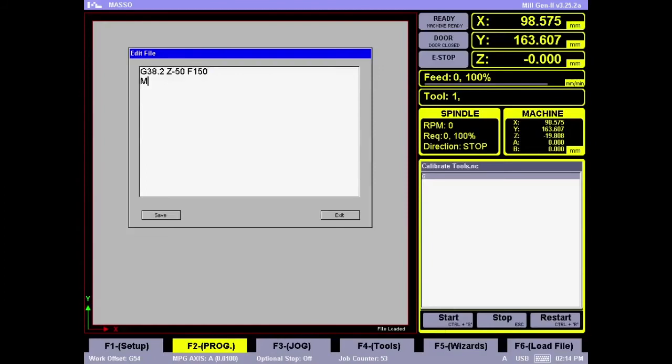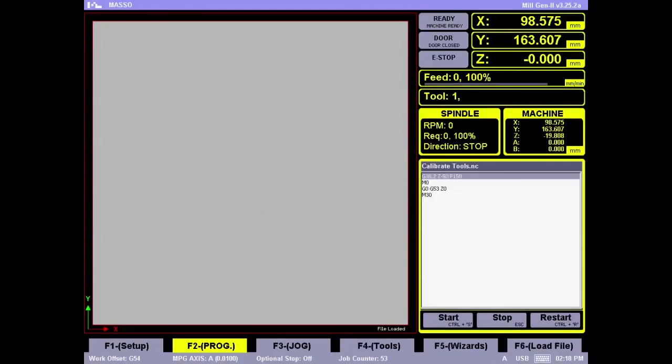Next we are going to put an M0 command, so this way when the tool touches the plate it will automatically stop and the program will come into feed hold. Next we will write G0 G53 Z0. So this will move the Z axis up to the machine Z0. And finally we will put in M30 to rewind the program to start once it is all finished. Press Tab to go to the Save button, press Enter to save. Go to the Exit and press Enter to save and exit.